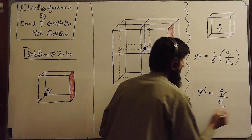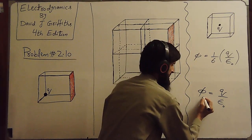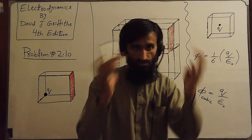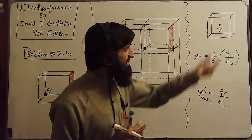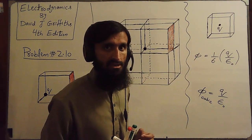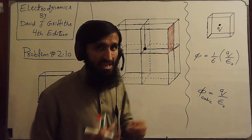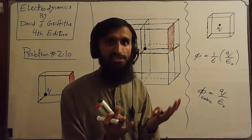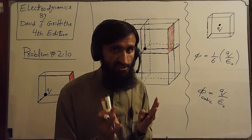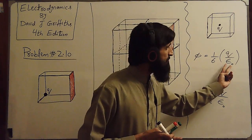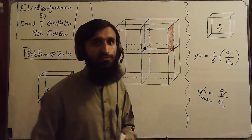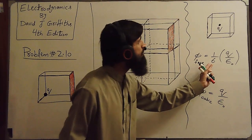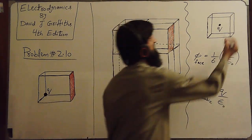Applying Gauss's law, q/ε₀ provides the flux through the complete cube, because the cube is our closed surface. But if we want to find the flux through any of its six faces, since the cube has six faces, we divide this quantity by 6. So the flux through any face equals (1/6)(q/ε₀).